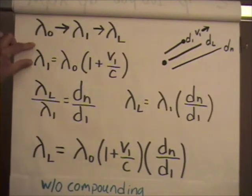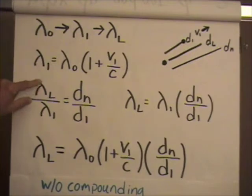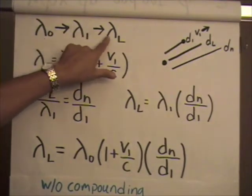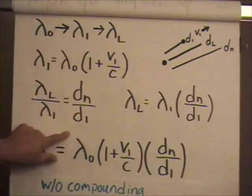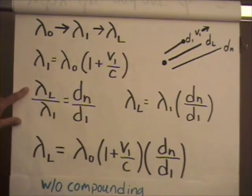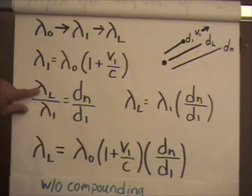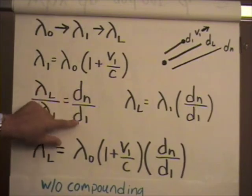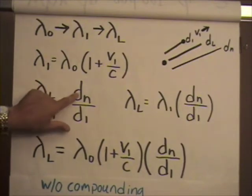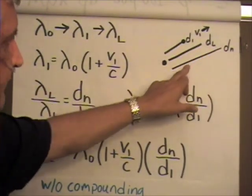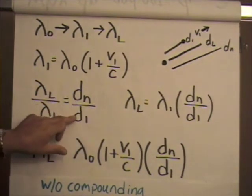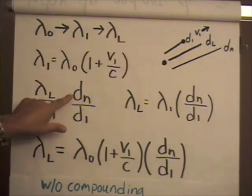Now the second part is the Cosmological redshift is given by this formula, that the final observed wavelength over wavelength one. So the ratio of those is equal to the ratio of dn, the final distance, over d1, the initial distance.